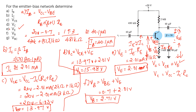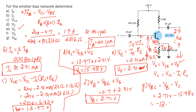Finally, VBC = VB − VC = 2.71 − 15.98 = −13.27 V. So VBC = −13.27 V.